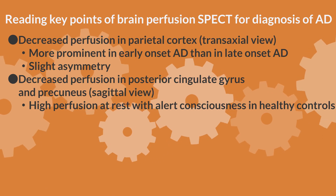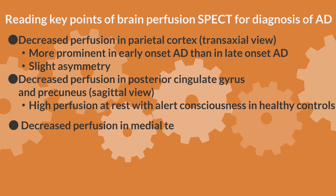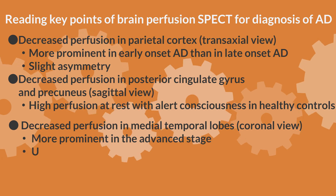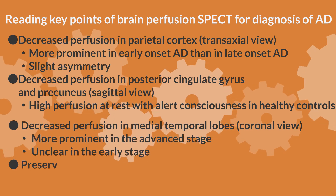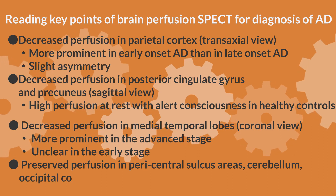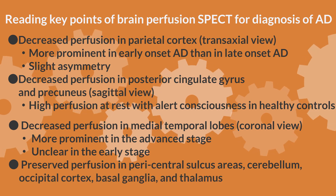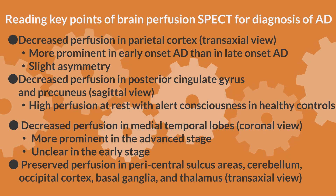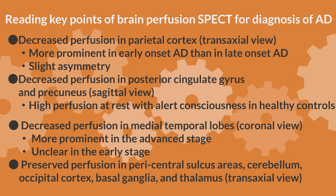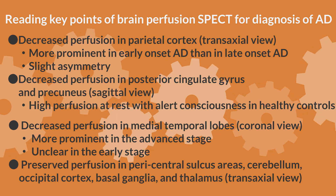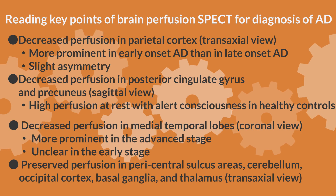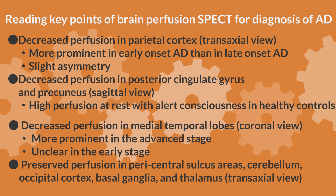Reduced perfusion in the medial temporal lobe can be determined by coronal sections. However, despite the presence of atrophy, hypoperfusion in this area is often not evident in early stages; in advanced cases, there is a perfusion decrease. It is important to note areas where perfusion is preserved: pericentral sulcus cortex, occipital lobe, cerebellum, basal ganglia, and thalamus should be assessed on transaxial images for preserved perfusion.